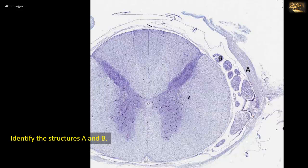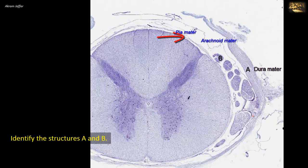You can see the outer thick covering of dura mater made of dense irregular connective tissue, labeled A. So A is the dura mater. Also note the thin arachnoid mater applied to the inner surface of the dura. Then the third and deepest layer, the pia mater, is applied to the surface of the cord.